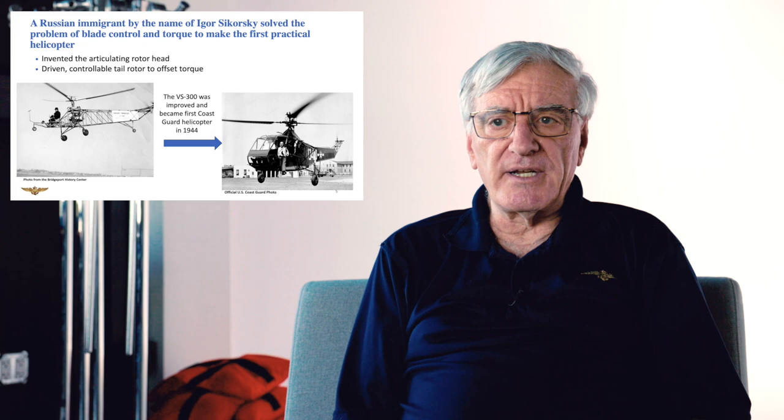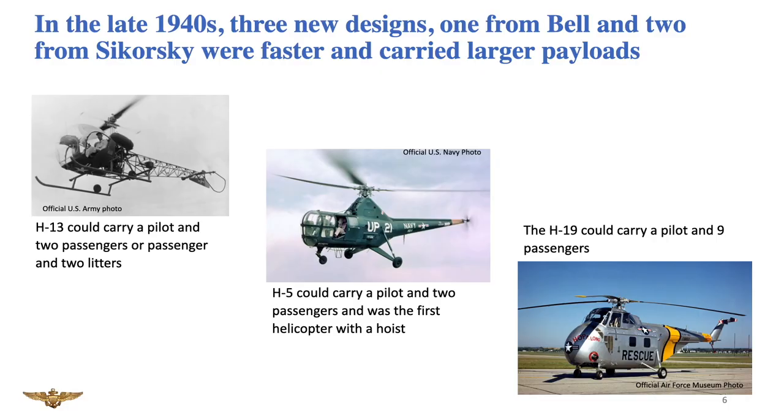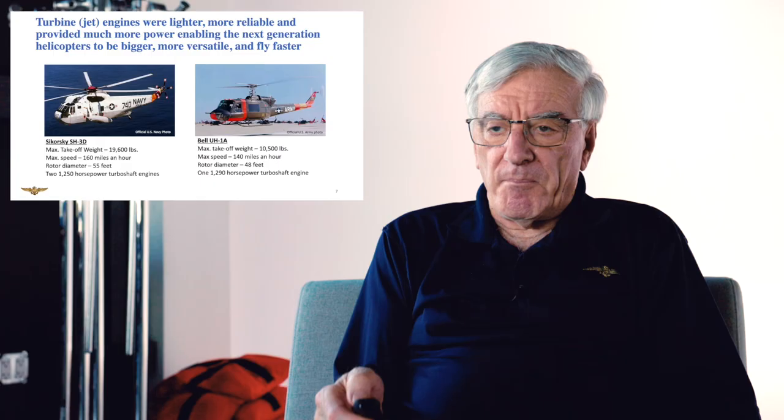In the late 40s, three new helicopter designs came out. One was the H-13, which was built by Bell, which at the time was a fixed-wing airplane manufacturer, and it was made famous in the movie MASH. It was used extensively in Korea, primarily for medical evacuation of wounded soldiers. The Navy came up with the H-5, built by Sikorsky. If you ever saw the movie The Bridges of Toko-Ri, this is the helicopter that Mickey Rooney flew. Then the Marines started flying this thing called an H-19, which was bigger than the H-5, bigger than the H-13, and theoretically carried nine passengers.